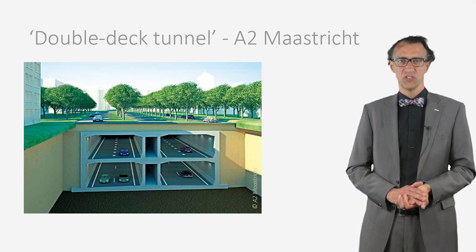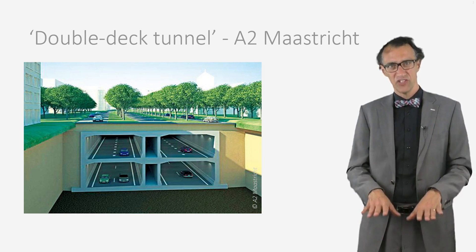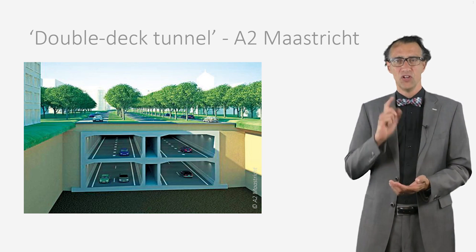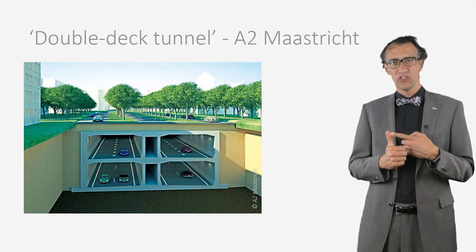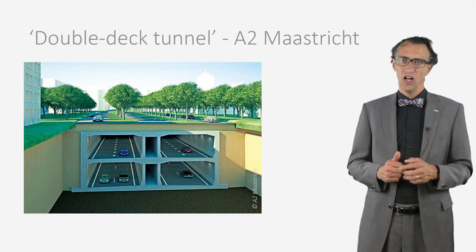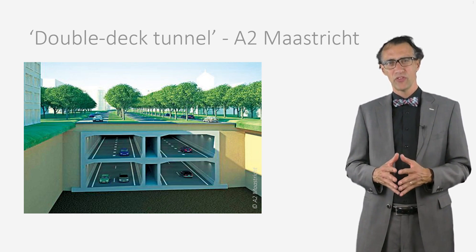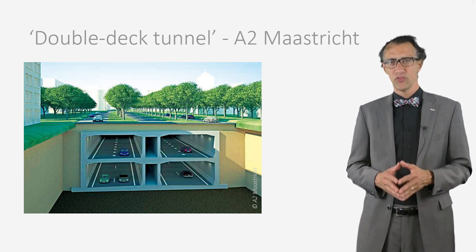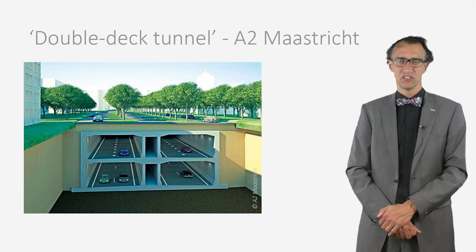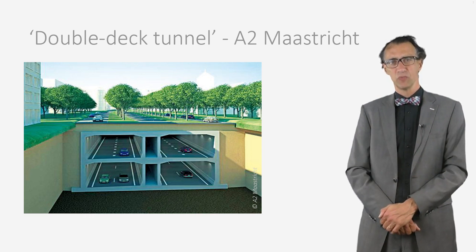This is a costly solution and without creating extra value, this solution could never have been built. How did they find the extra value to make the plan feasible? The extra value was found by bringing the highway underground in a tunnel. In several ways, extra value can be created at ground level. Firstly, the space of the old highway comes available for other functions. Plans have been made for real estate development, offices and apartment buildings. Depending on the market, in total 1,000 new apartments and a maximum of 30,000 square meters of extra commercial real estate will be realized up to 2026. This city development contributes financially to the infrastructure to make the project feasible.